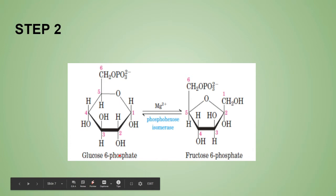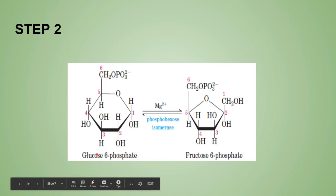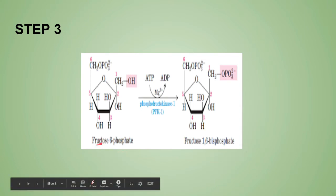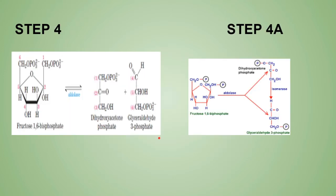Step 2: glucose-6-phosphate is isomerized to fructose-6-phosphate by the enzyme phosphohexose isomerase. Step 3: fructose-6-phosphate, in the presence of phosphofructokinase-1 (PFK-1), consumes one ATP and is converted to fructose-1,6-bisphosphate. Steps 1 through 3 together are known as the preparatory phase of glycolysis.